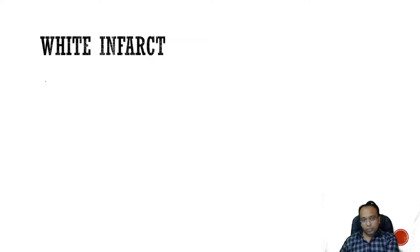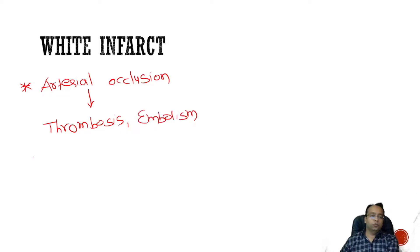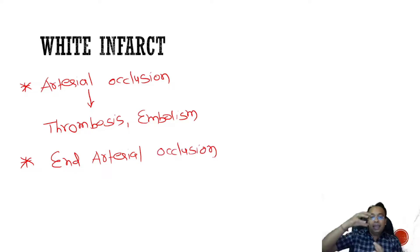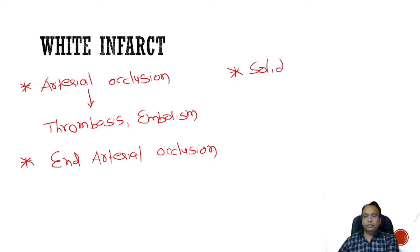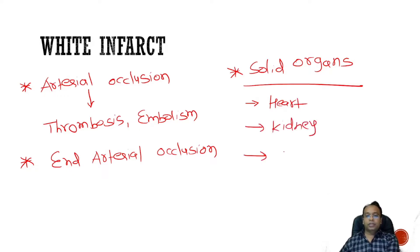White infarction is commonly seen due to arterial occlusion. The common cause of arterial occlusion is thromboembolism — thrombosis or embolism in 99% of cases. It is seen in organs with end-arterial blood supply, meaning the organ has supply by only one artery with no dual supply. It is seen in solid organs — coagulative necrosis is also seen in solid organs. It is seen in the heart (myocardial infarction), the kidney (renal infarction), and the spleen (splenic infarction).